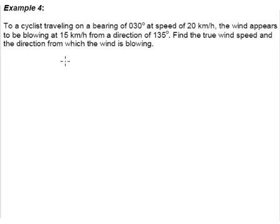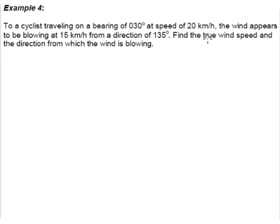Example 4. To a cyclist travelling on a bearing of 30 degrees at a speed of 20 km per hour, the wind appears to be blowing at a certain speed and direction. This is when you have to read very, very carefully.